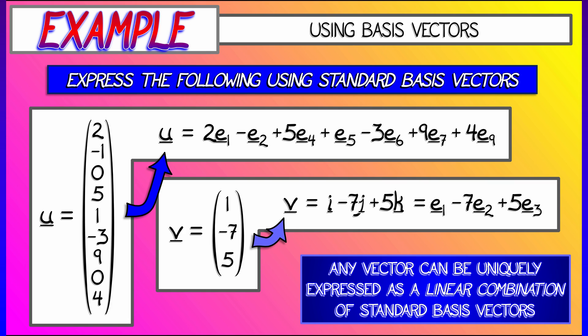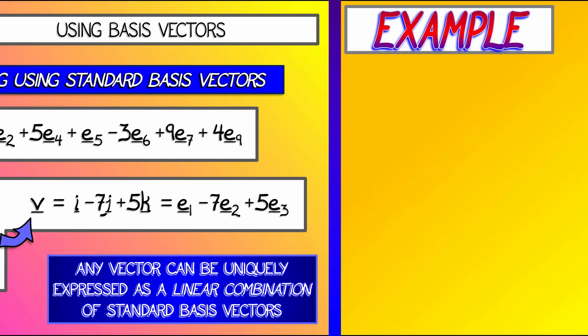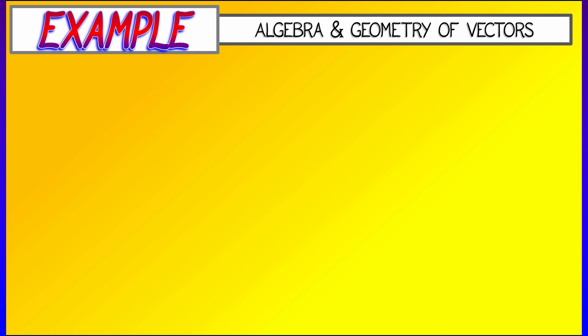The idea is once you fix your standard basis vectors, any vector can be uniquely expressed as a linear combination of those standard basis vectors. In this case, you have a choice between ijk and e1, e2, e3, but that's it.